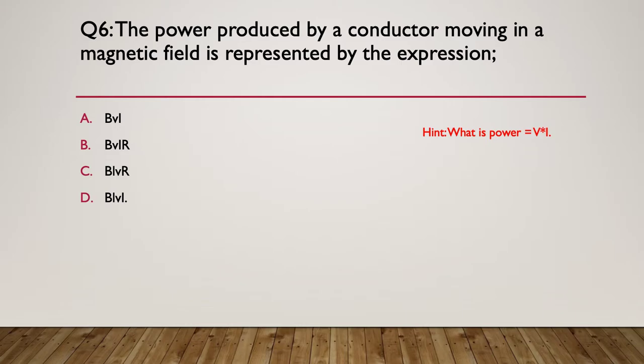Here's the hint: what is power equal to? Current multiplied by voltage. The answer is option D: B × L × V × I — B being the flux field, L being the length, V being the voltage, and I being the current. That gives you power.